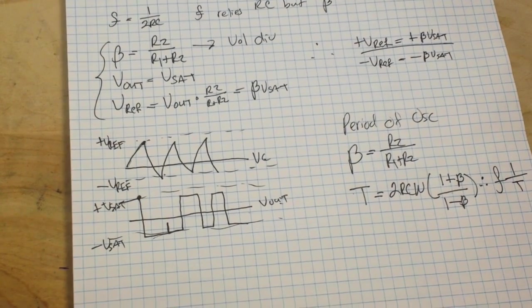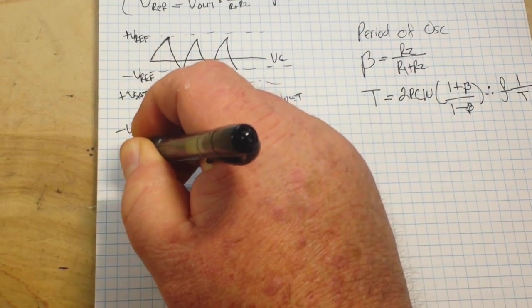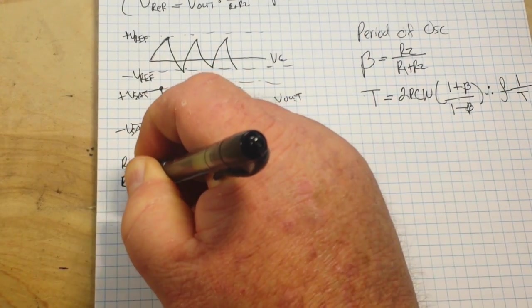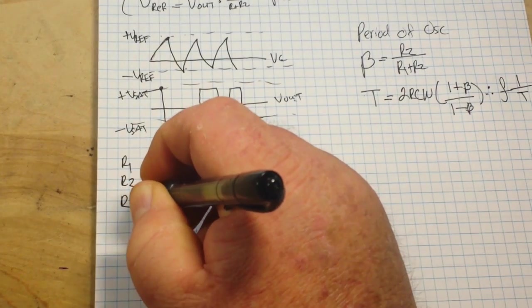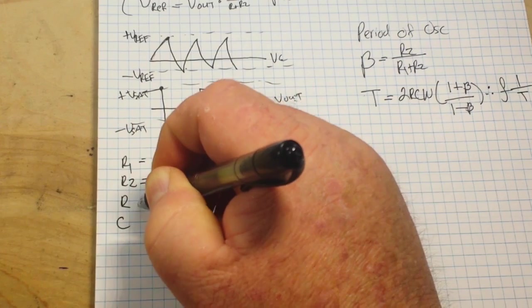Alright, now we have all the math done and we can figure it out. So we need some values: R1, R2, R, and C. So we'll try and make this easy here.